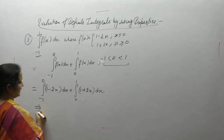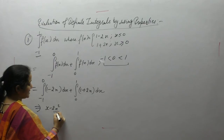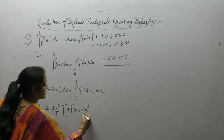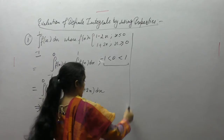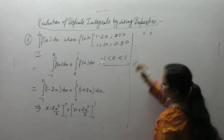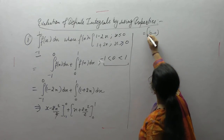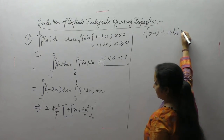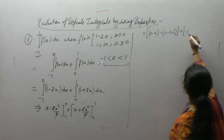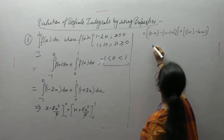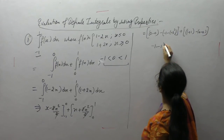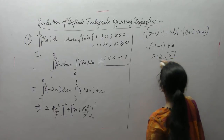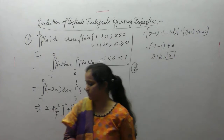Now simplify and solve: the integral of 1 is x, and the integral of 2x is x squared. Putting in the limits: for the first part, [x minus x²] from minus 1 to 0 gives (0 minus 0) minus (minus 1 minus 1) = 2. For the second part, [x plus x²] from 0 to 1 gives (1 plus 1) minus 0 = 2. The total answer is 2 plus 2 equals 4.